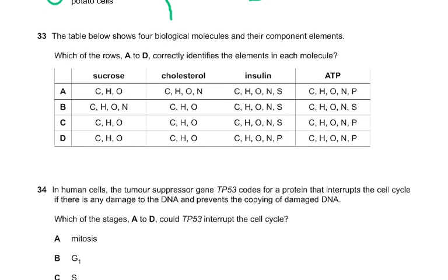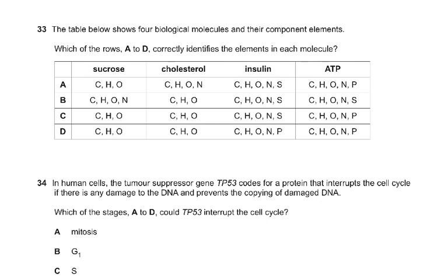Coming to question number 33: the table shows four biological molecules and their component elements. ATP — adenosine triphosphate — insulin is a protein molecule, cholesterol is a fat molecule, and sucrose is a carbohydrate. The answer is C: sucrose has carbon, hydrogen, oxygen; cholesterol has carbon, hydrogen, oxygen; insulin has nitrogen and sulfur; and ATP has nitrogen and phosphate — because ATP has a nitrogenous base, adenine, and the triphosphate group.